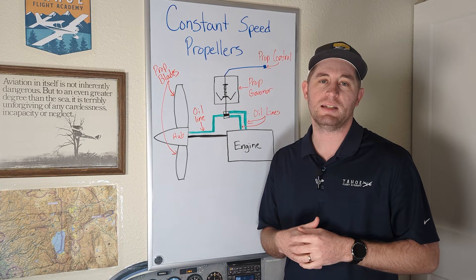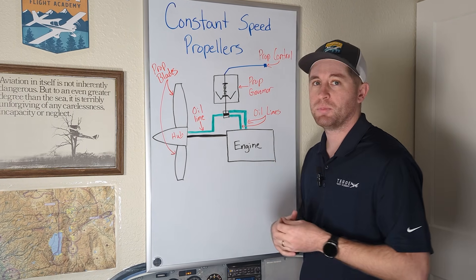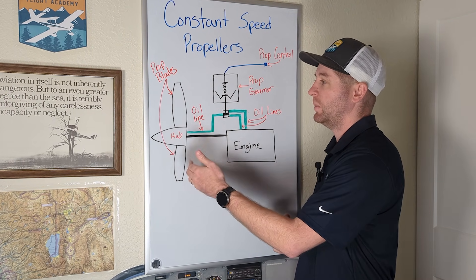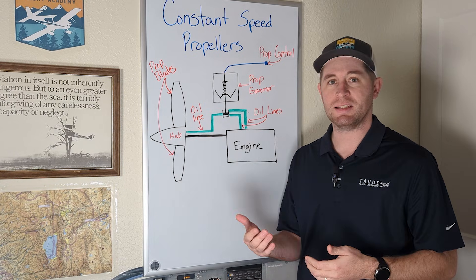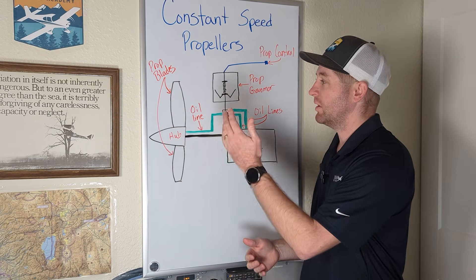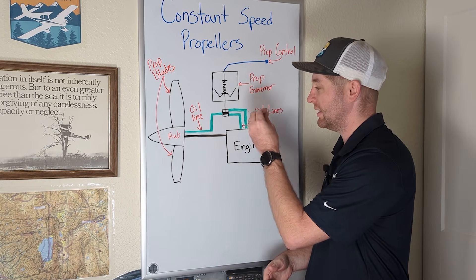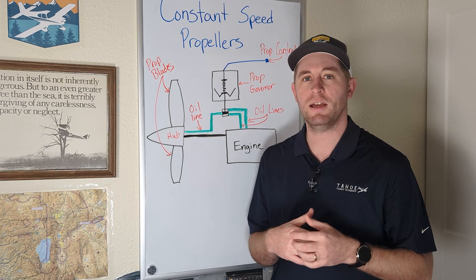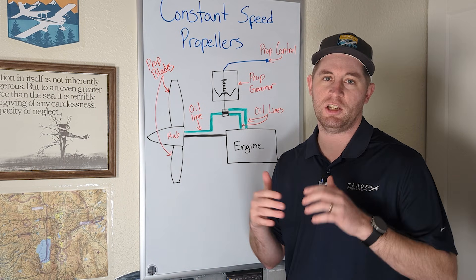One common misconception is that a constant speed prop is maintaining a constant RPM with the propellers, which isn't the case. The point of a constant speed prop is to maintain a consistent engine RPM, and to do that, the propeller blade angles are constantly changing.